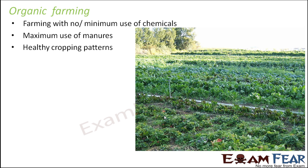The third thing that can be followed is healthy cropping patterns. There might be certain crops which grow well in a particular season — like the Rabi crops and the Kharif crops. The crops which grow well in that season can have one round, and in the next season which is not suitable for that crop, we might plant some other crop suitable for that season. These healthy cropping patterns can also improve farming and crop quality.